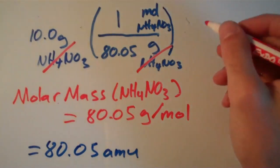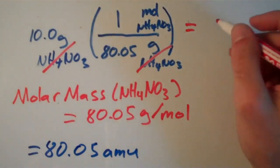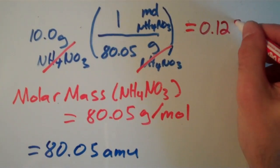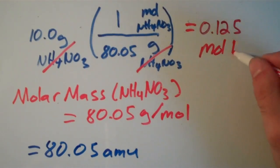And we get 10.0 divided by 80.05. And that ends up being, with the proper number of significant figures and all that good stuff, we have 0.125 moles of ammonium nitrate.